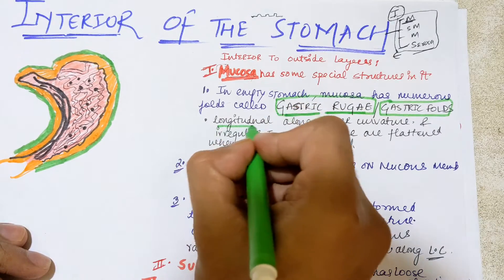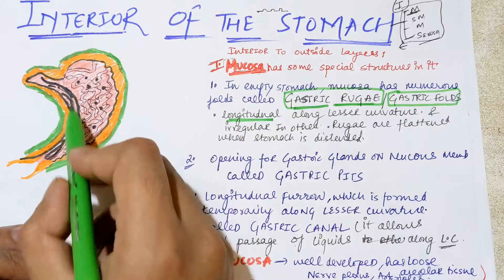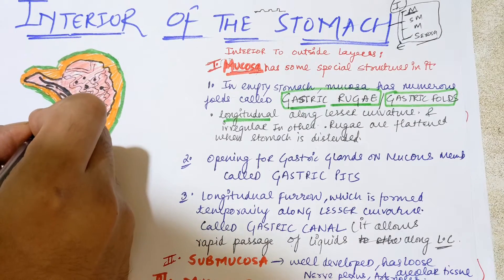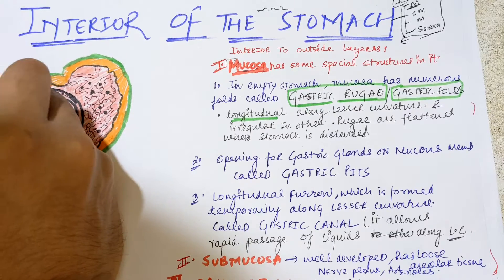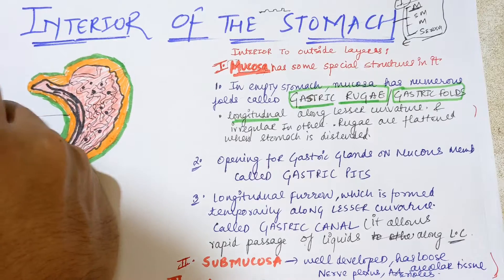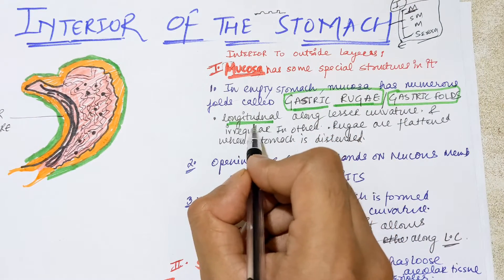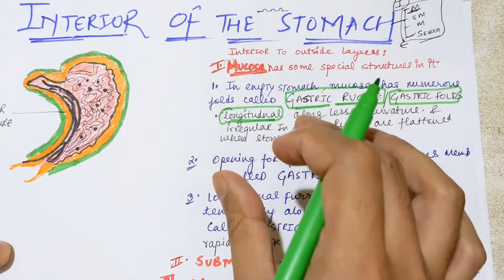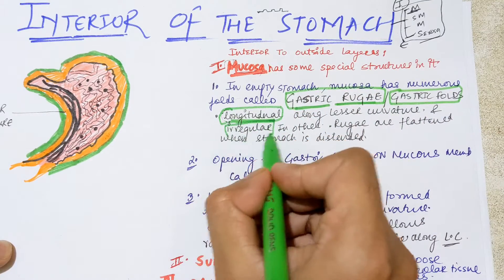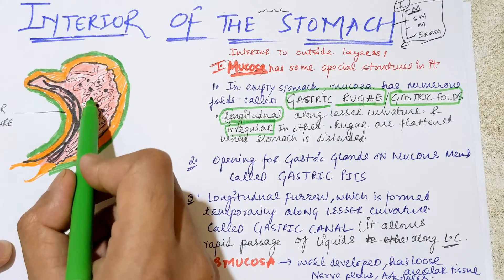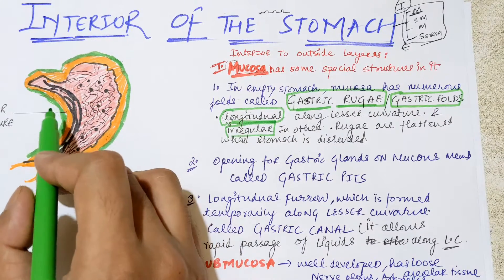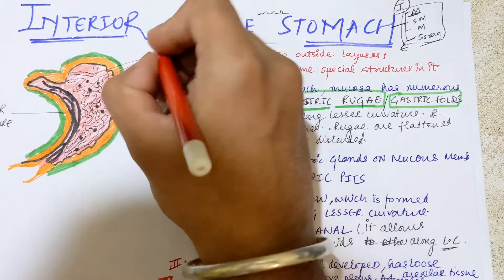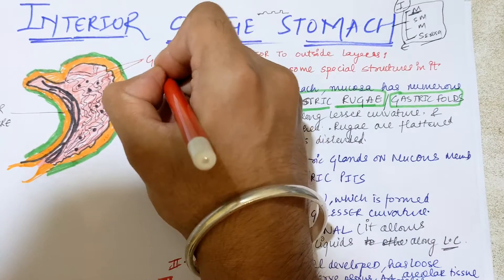These gastric folds have a specific shape. Along the lesser curvature, the gastric folds are longitudinal in shape. In other parts of the stomach they are irregular. So on the lesser curvature side they are longitudinal, but elsewhere they have irregular shapes — these are all gastric folds.